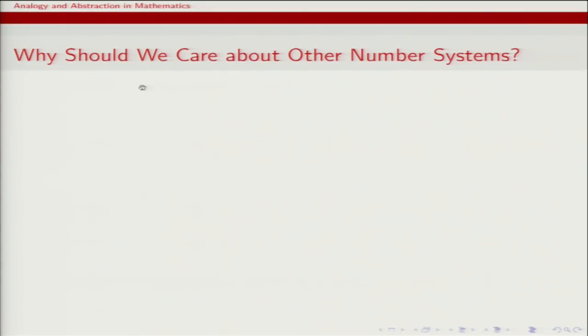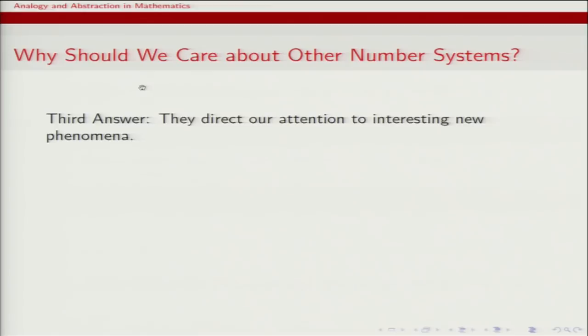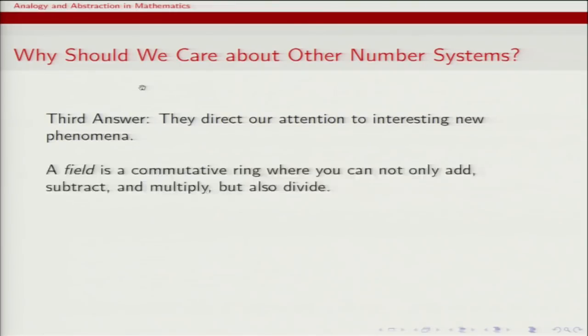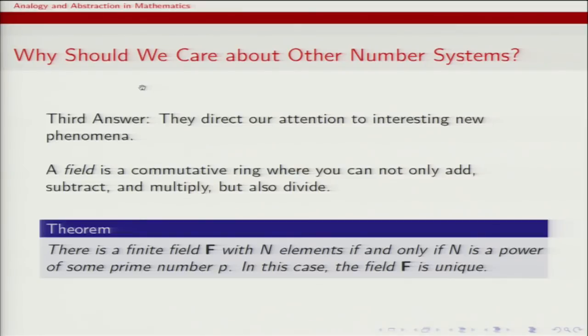A less conservative argument: other number systems are interesting in their own right and lead to new questions. A field is a commutative ring where you can also divide. Fields with finitely many elements are well understood: a finite field with n elements exists if and only if n is a prime power, and in that case the field is unique. Finite fields are fundamental objects appearing in number theory, algebraic geometry, discrete mathematics, and parts of theoretical computer science — objects we wouldn't have known to look for without being open-minded about other number systems.